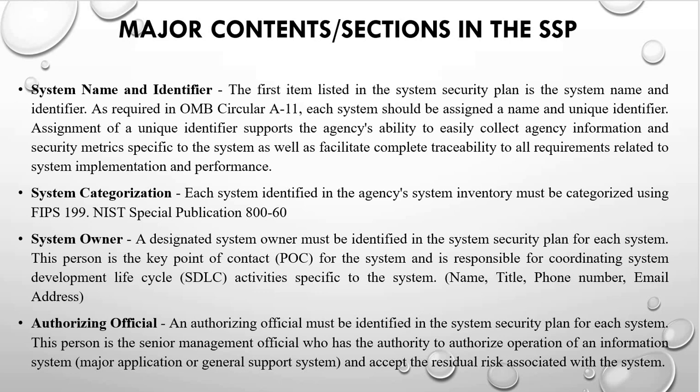Let's look at some of the major contents or sections in the SSP — these sections you have to be familiar with. The first is the system name and identifier. According to OMB Circular A-11, each system should be assigned a name and unique identifier. Assignment of a unique identifier supports the agency's ability to easily collect information and security metrics specific to the system, as well as facilitate complete traceability to all requirements related to the system implementation and performance. Another major section is the system categorization — each system identified in the agency system inventory must be categorized using FIPS 199 and NIST 800-60.